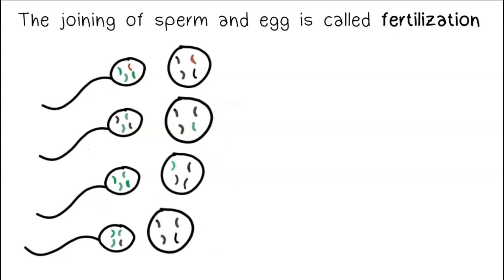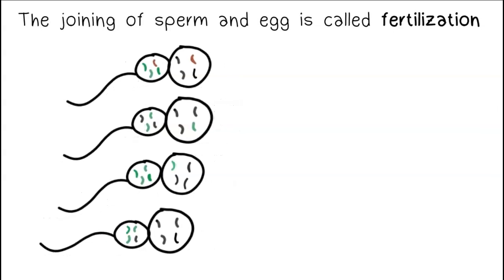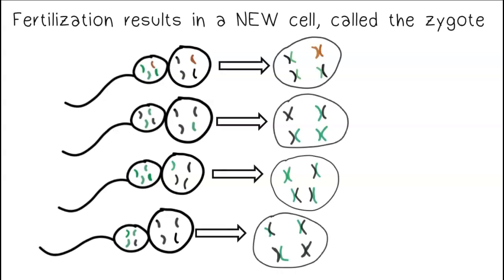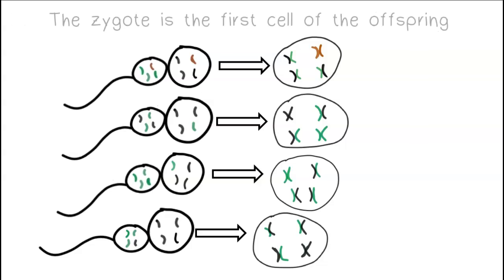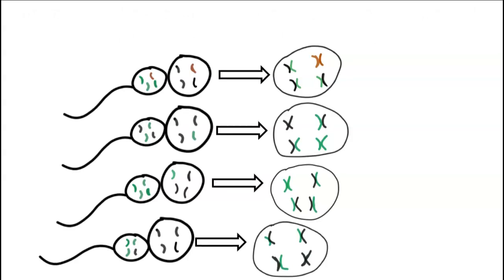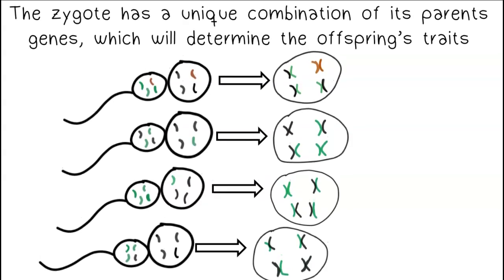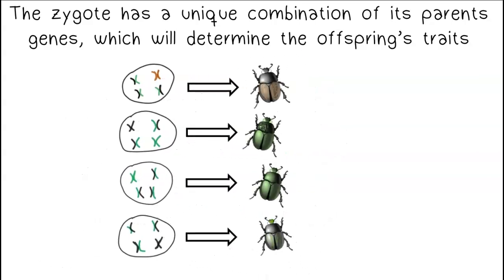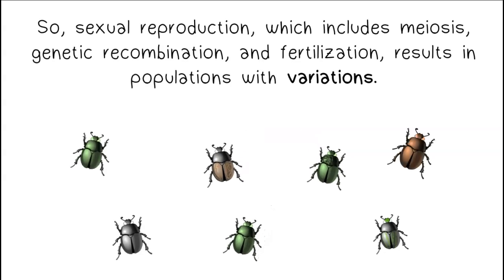The joining of sperm and egg is called fertilization. Fertilization results in a new cell called the zygote. The zygote is the first cell of the offspring. The zygote has a unique combination of its parents' genes, which will determine the offspring's traits. So, sexual reproduction — which includes meiosis, genetic recombination, and fertilization — results in populations with variations.